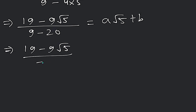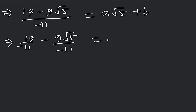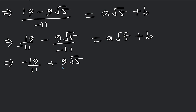The denominator is 9 minus 20, which equals minus 11. Now we divide: (19 minus 9√5) divided by minus 11. Since 11 is common, we cancel it. So we get minus 19 over 11 plus 9√5 over 11. And here we have a√5 plus b on the right-hand side.